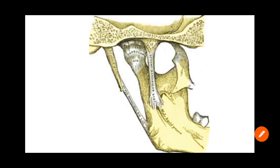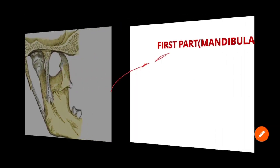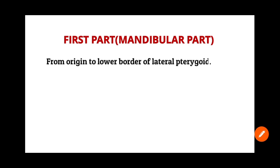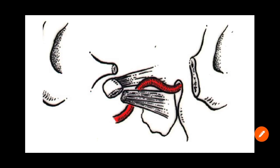Imagine this is the inner surface of the mandible. Here you have the neck of the mandible and this is your spinomandibular ligament. The maxillary artery passes between these two structures — with the neck of the mandible laterally and the spinomandibular ligament medially. So the first part, the mandibular part, runs from origin to the lower border of the lateral pterygoid, lying between the neck of the mandible laterally and the spinomandibular ligament medially.